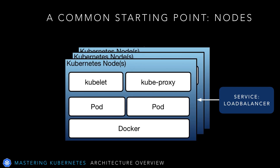A node is a worker machine in Kubernetes. A node can be a VM or even a physical machine. Each node, regardless of what it is, has the services necessary to run pods and is managed by the master components. Remember, masters just decide where to run your application. Kubernetes could consist of any number of nodes — it varies depending on your needs. Each node has a common set of services at the very least, regardless of what pods it may be running, that allow the master to send it work to do.